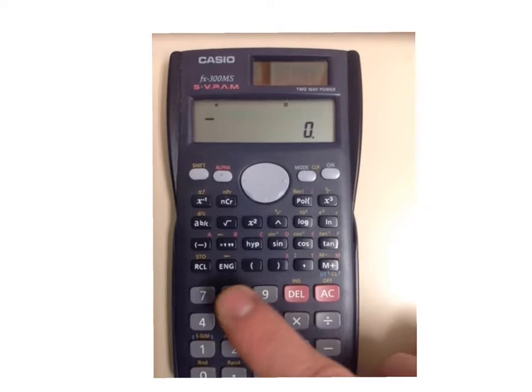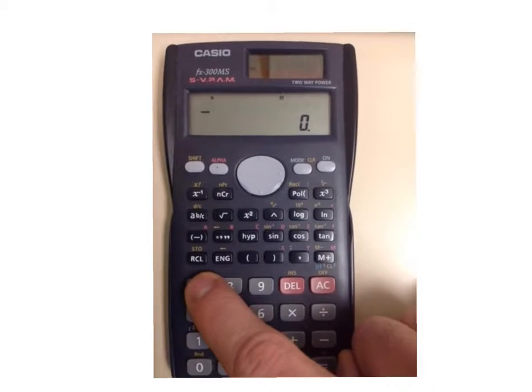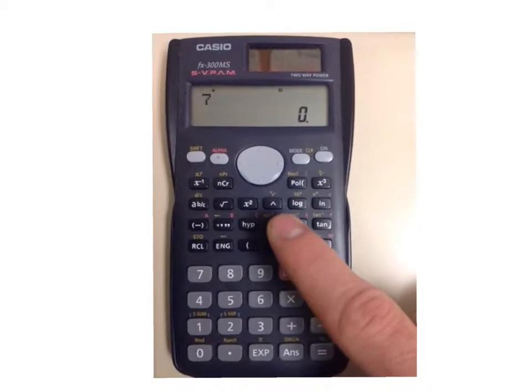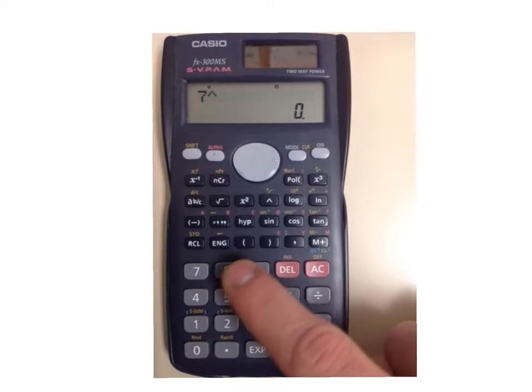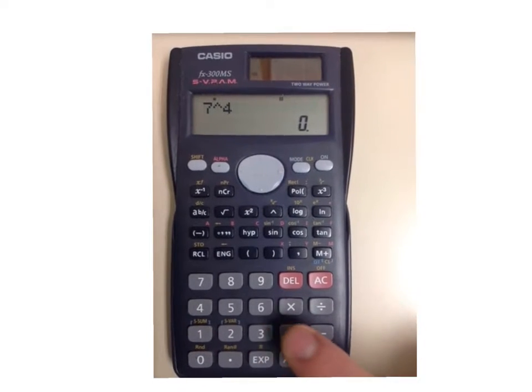Now if you want to do a different exponent, say 7 to the exponent 4, there's your exponent button right there. So it looks like this when you type it into your calculator.